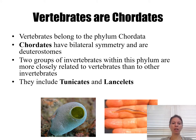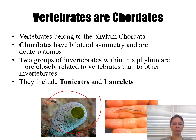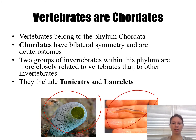The two most rudimentary forms of chordates are tunicates and lancelets. This is a tunicate, also known as a sea squirt, and this is a lancelet.